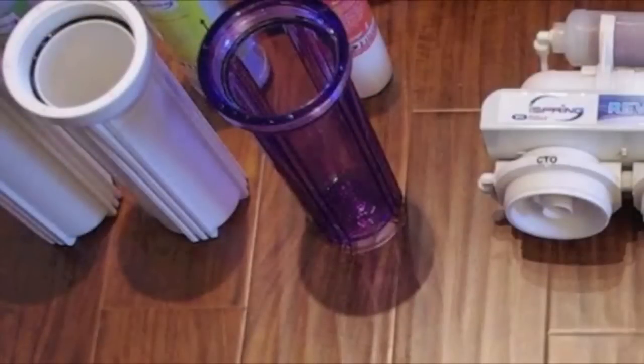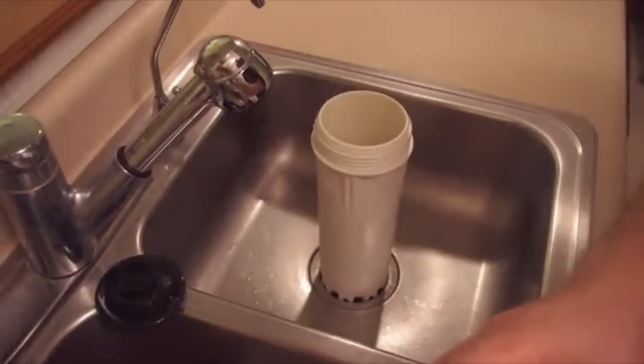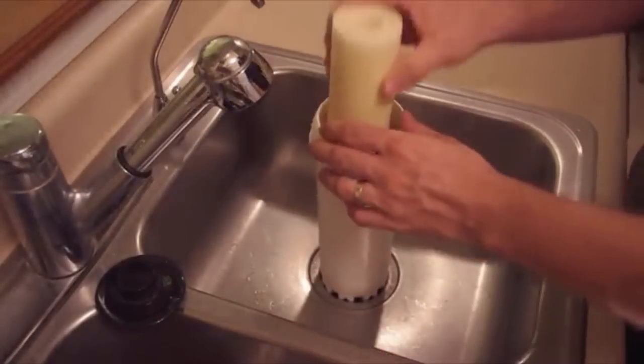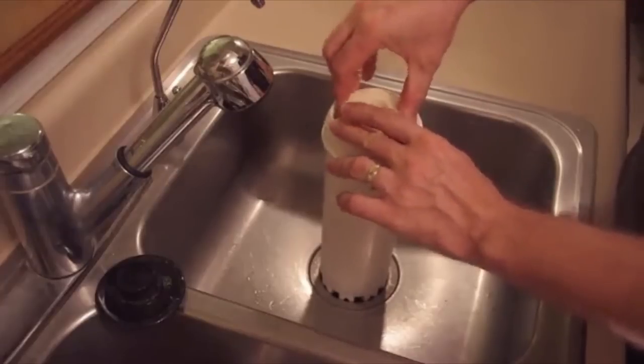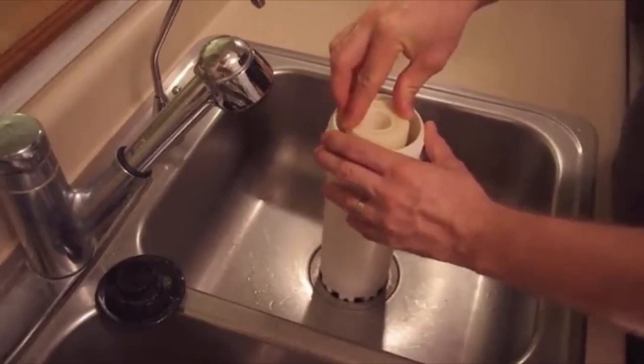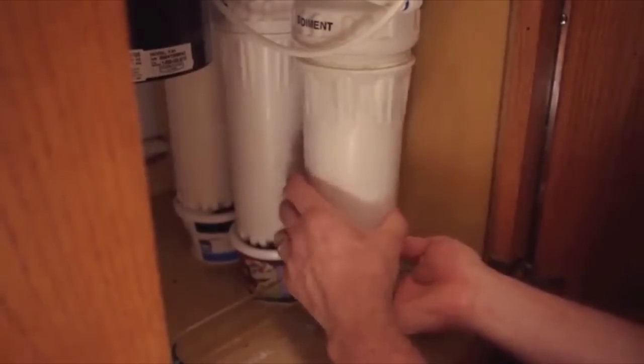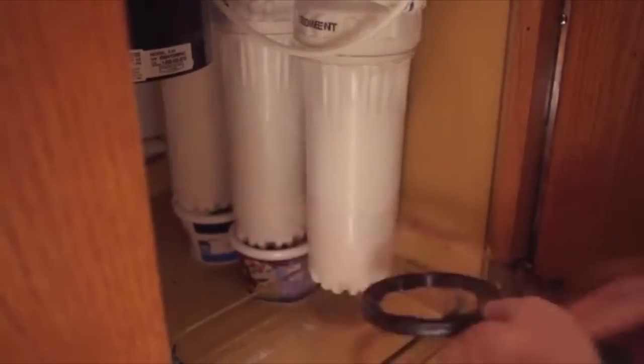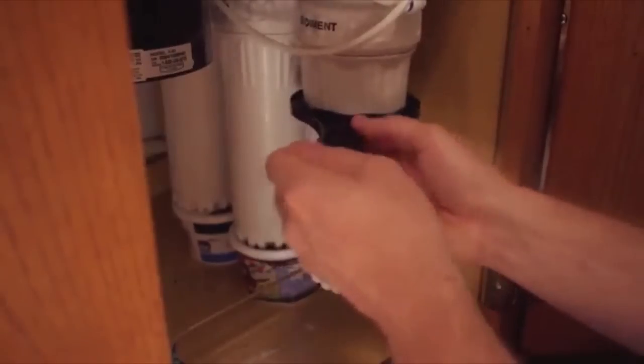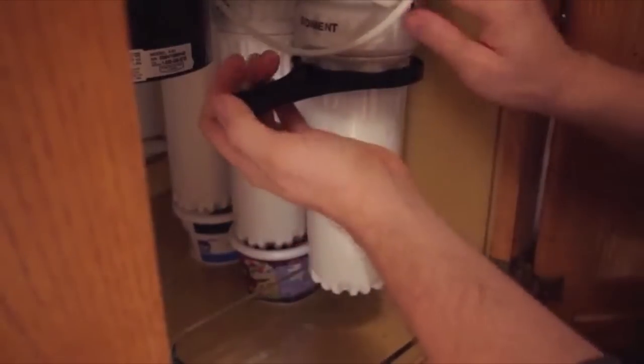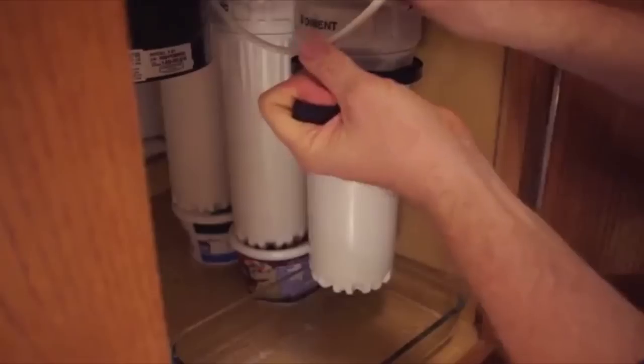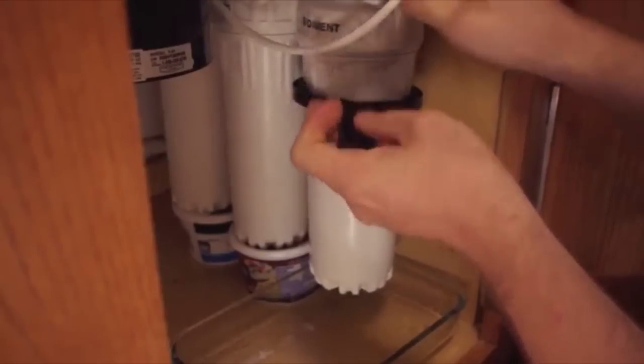You may want to clean the filter housing with soap and water and rinse thoroughly. Some Vaseline may be used to lubricate the O-ring. Install the new filter into the housing. Reinstall the housing and tighten with a wrench. Repeat this process for the other two pre-filters.